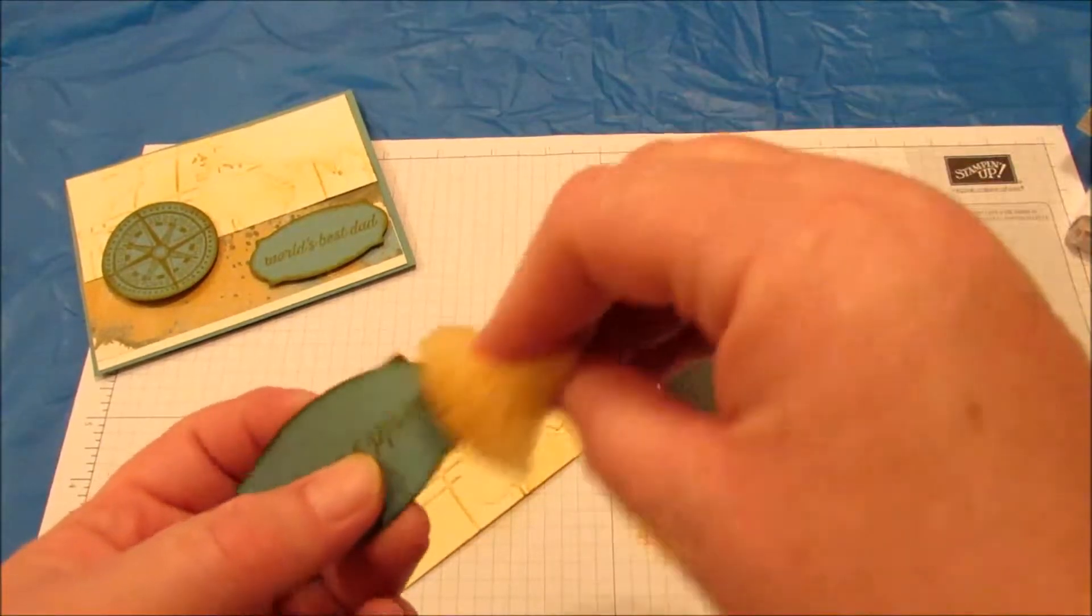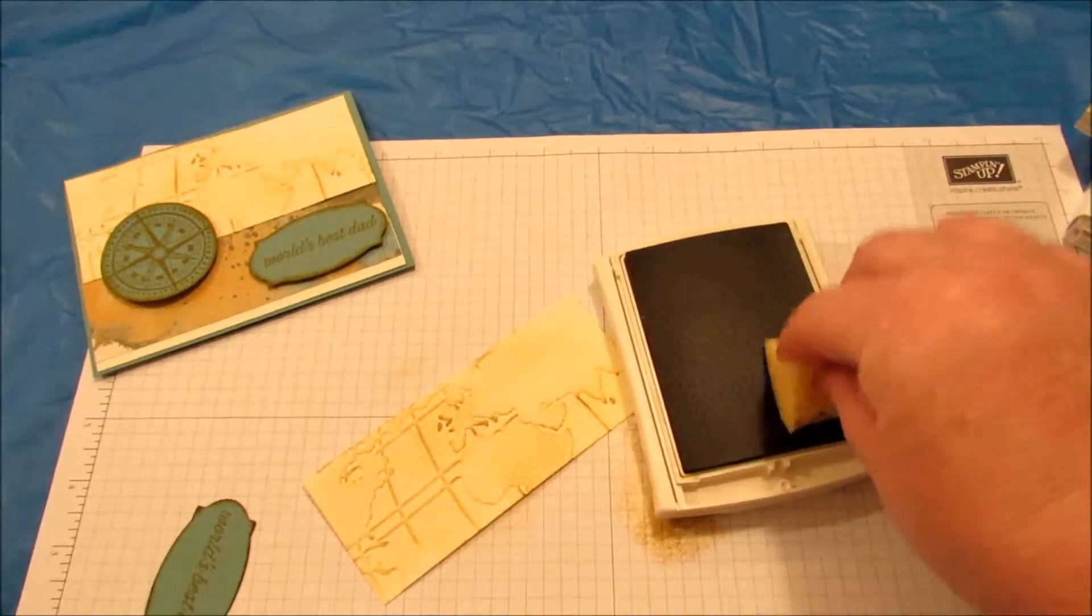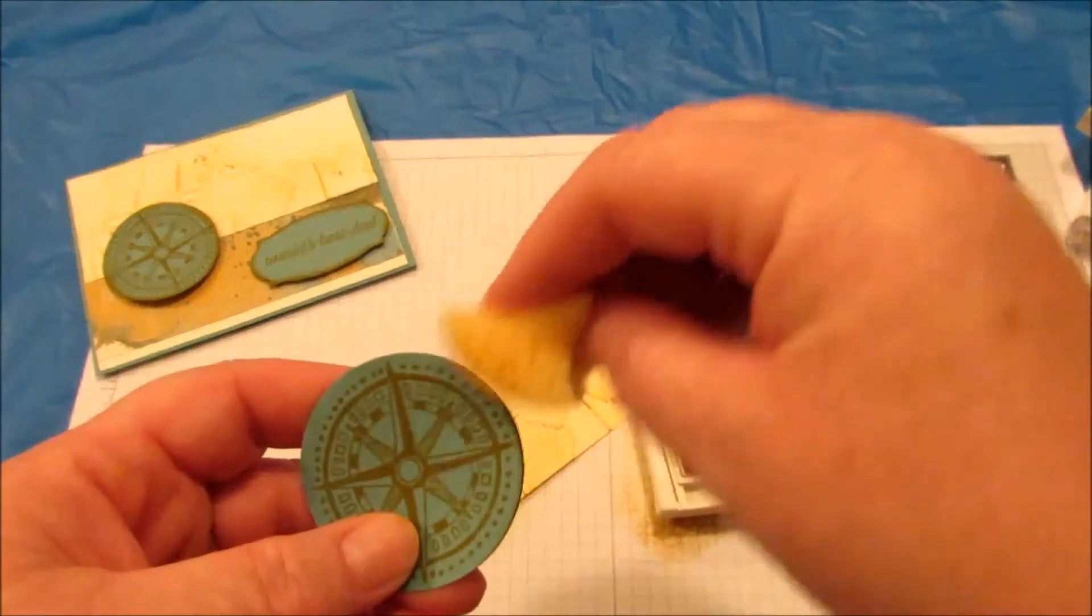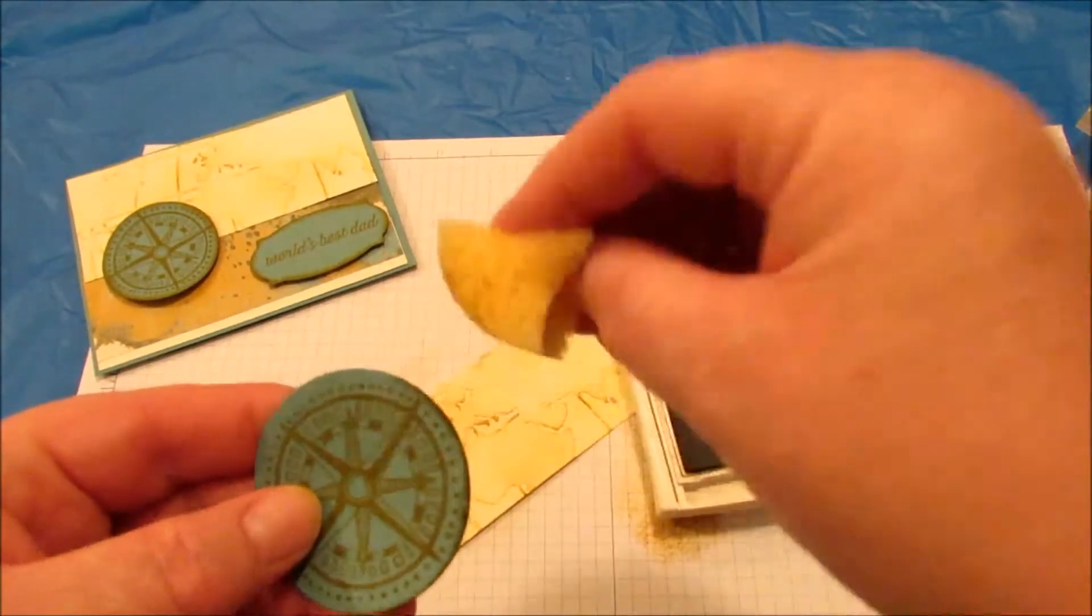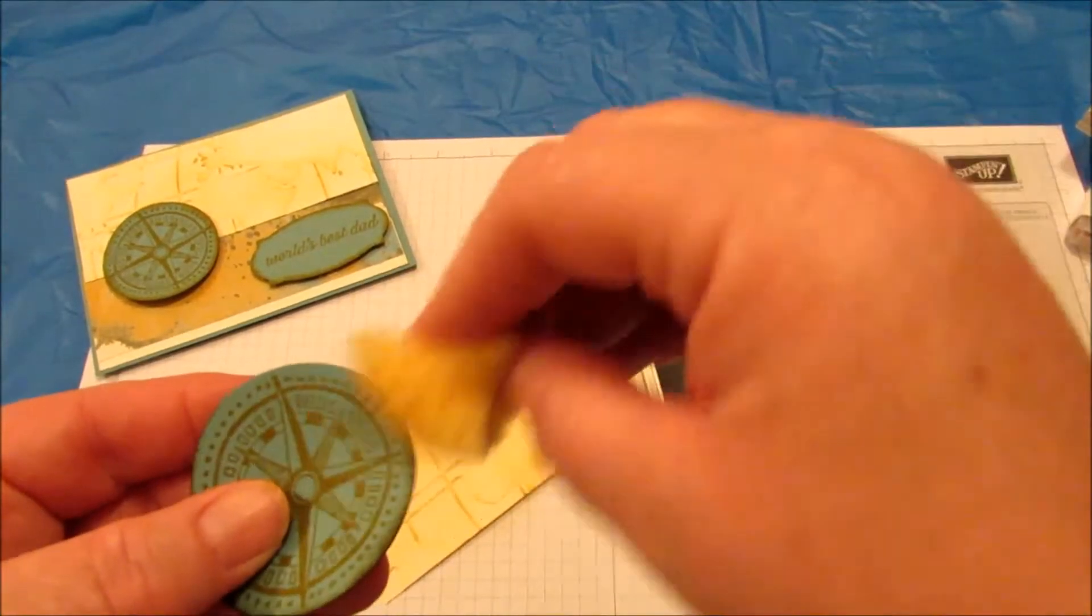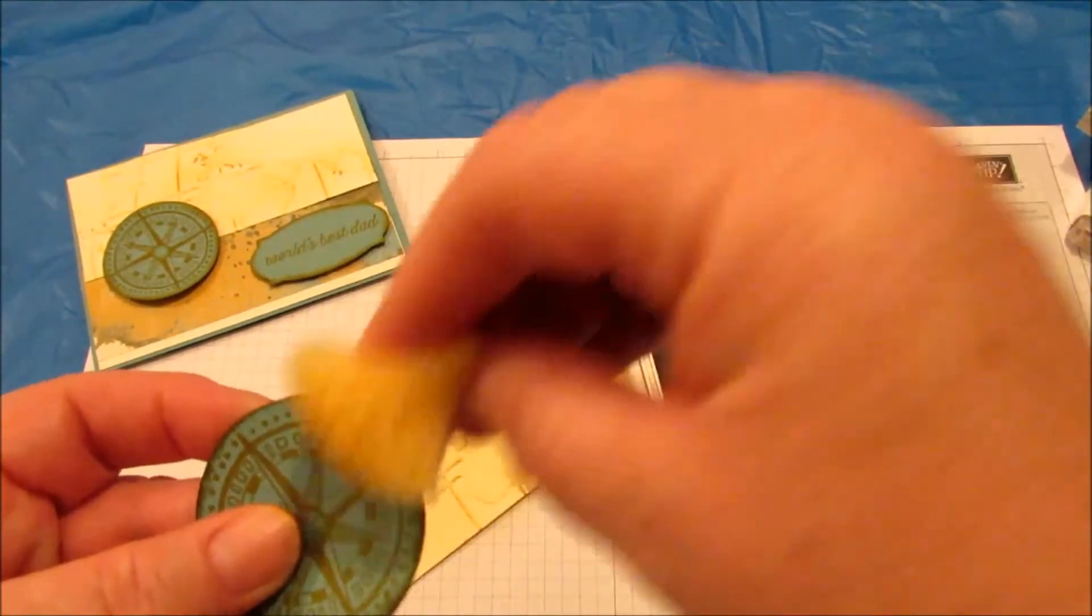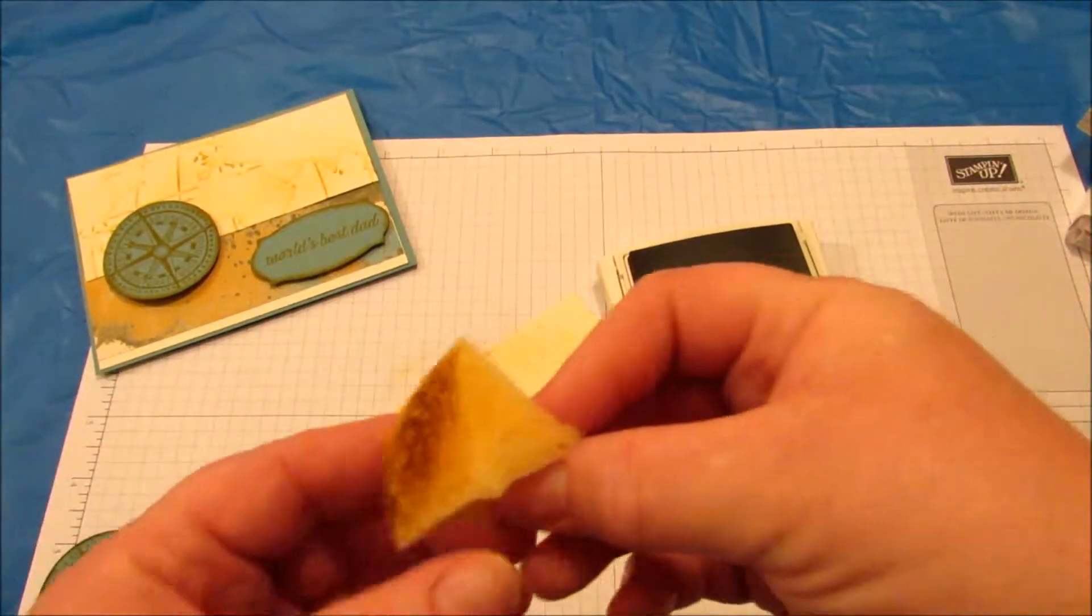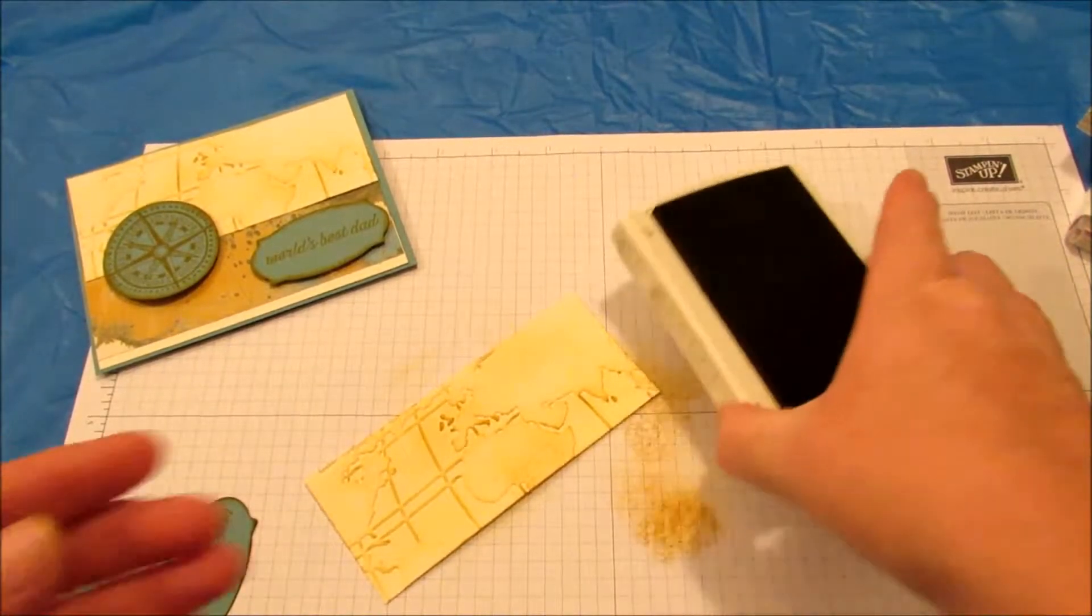So I'll do that with that. And I'm also doing it with the compass stamp here that I punched out with the round punch. Just a little, just to finish things off. I think if you watch my videos, you see I do a lot of that. So we're done with the ink.